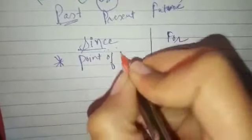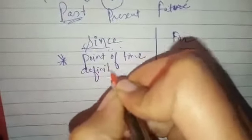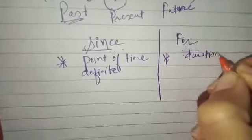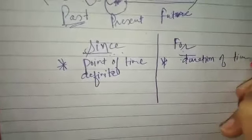Let us see what is the difference between since and for. Since is used for any point of time, means any definite time. And for is used for duration of time, period of time we can say.